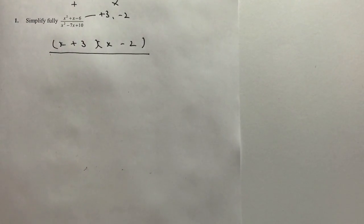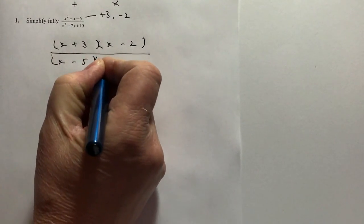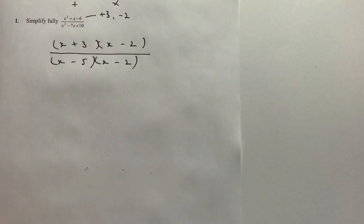I'm going to look at that plus ten. I'm going to say what two numbers when I multiply them together will make plus ten and when I add them together will make minus seven. So those two numbers are actually going to be minus five and minus two.